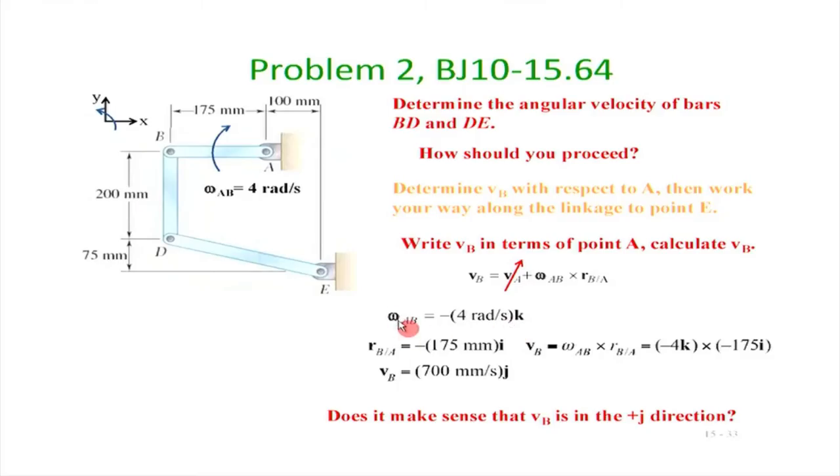What is omega_AB? Note that if this is our x-axis and this is the y-axis, the rotation is clockwise. The z-axis comes out of the plane, so the thumb goes into the plane for clockwise rotation. Therefore omega times minus k-hat is the vectorial form for the angular velocity. The angular velocity of AB is minus 4 radians per second times k-hat — the minus sign indicates clockwise in the plane of the paper.